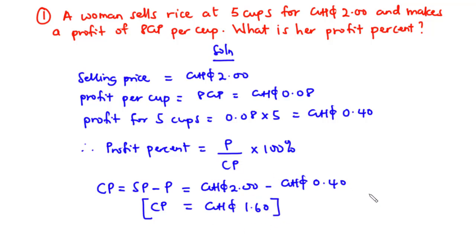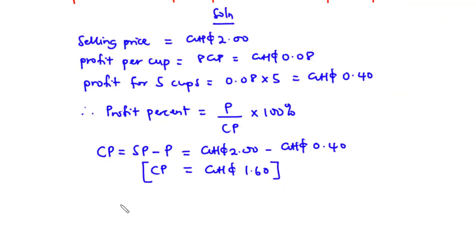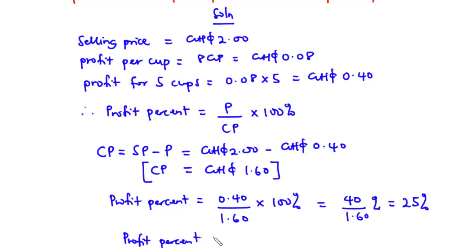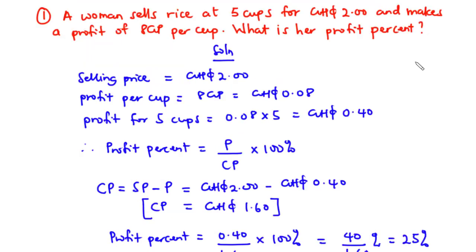Now using this value we can find the profit percent: 0.40 / 1.60 × 100% = 40 / 1.60 = 25%. So the profit percent she made is 25%.